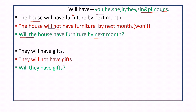The subject here is 'the house'. Will is placed before the subject to form a question. Second example: 'They will have gifts.' Here the subject is 'they'. Negative sentence: 'They will not have gifts.' Interrogative sentence: 'Will they have gifts?' Will is placed before the subject in the interrogative sentence.